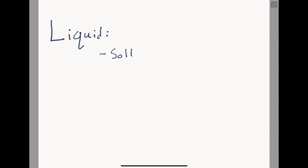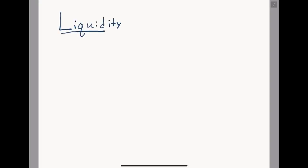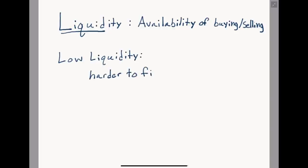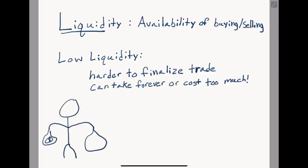If an asset or item is considered liquid, it means it can be sold or purchased easily at a fair market value and without hassle — think gold or cash. An asset that is illiquid will take more work to find a buyer and secure a deal — real estate or your car would be an example. Liquidity is a term used to describe the availability that exists for selling or buying any asset, and how likely you are to be able to sell your asset at a fair price.